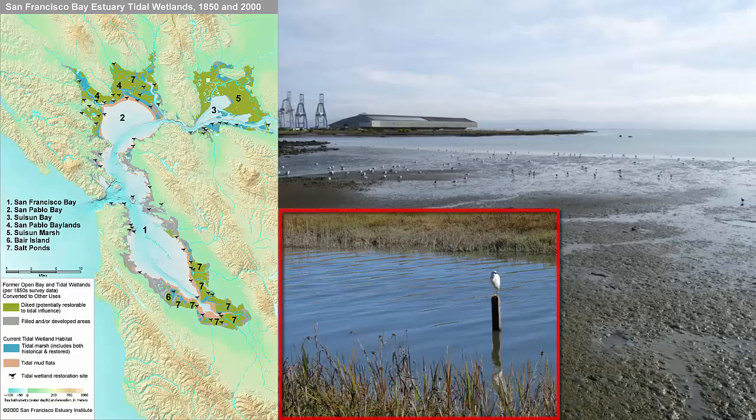Over 100 years ago, San Francisco Bay was surrounded by muddy tidal wetlands, which are nurseries for invertebrate and fish populations. They also help to clean up the water by providing a place where heavy pollutants can settle out into sediment, and salt marsh plants can transform wastes and other pollutants into harmless substances.